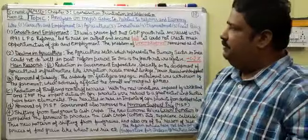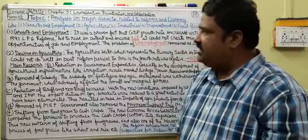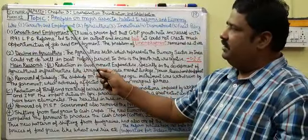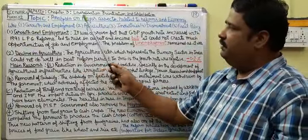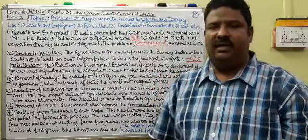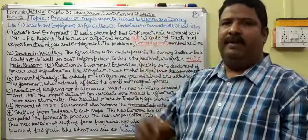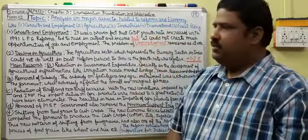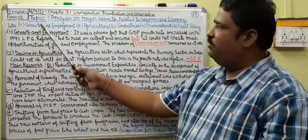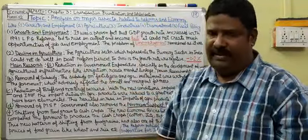The important aspects we will cover are: 1. Growth and employment, 2. Agriculture, 3. Industries, 4. Disenfranchisement, and lastly the fiscal policy or budgetary policy of India. We will start with the first point — growth and employment.